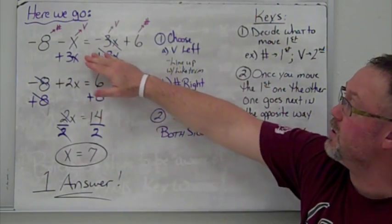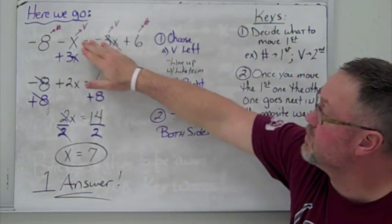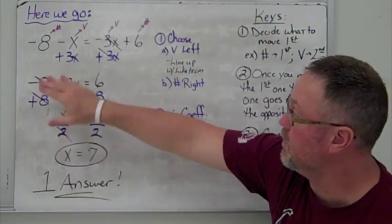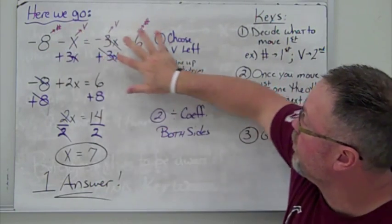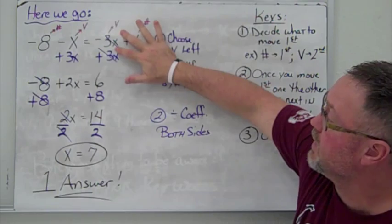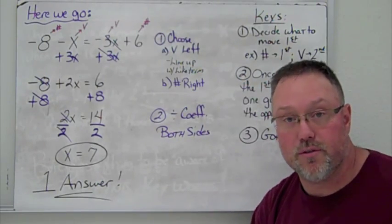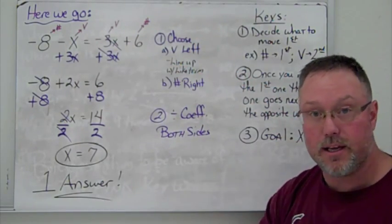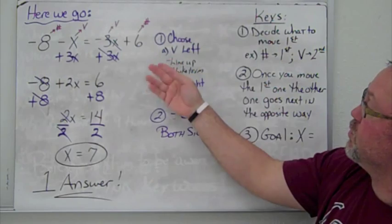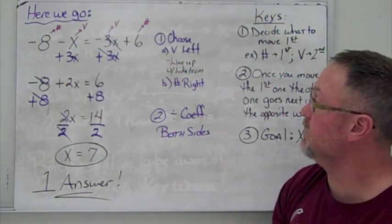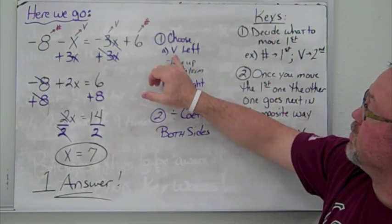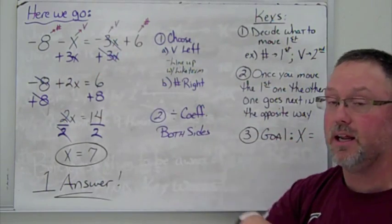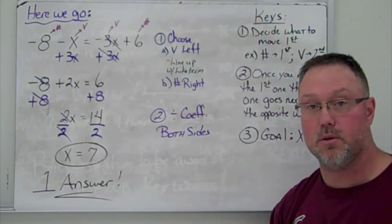When you're given an equation with variables on both sides, you need to move one or the other. When I say 'number,' I mean the number itself; when I say 'variable,' I mean the variable along with its coefficient. You get a choice — I'm going to choose to move the variable to the left-hand side. Anything we move over an equal sign, we do by the opposite operation.